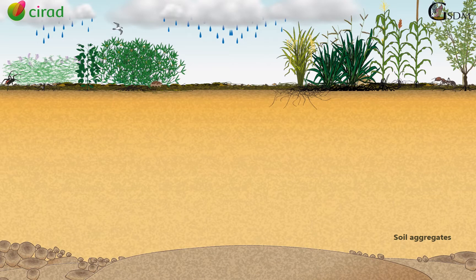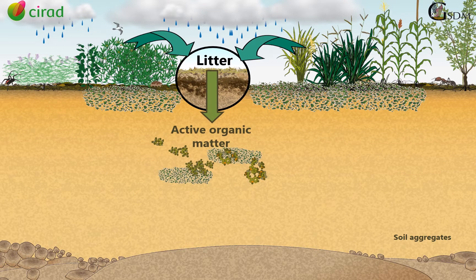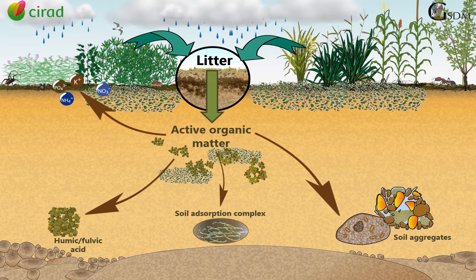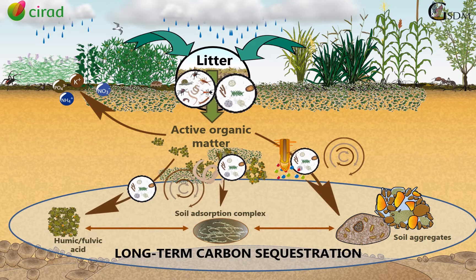To sum up, well-managed DMC systems should provide the soil with a continuous and important flow of diverse and fresh organic matter. A fraction of this active organic matter is quickly mineralized, while the other may be stabilized through the three main processes: progressive humification, adsorption into the mineral soil, and protection within soil aggregates. Each one of these processes offers a different kind of protection to the active organic matter, and they may be combined. Keep in mind that stabilization processes are highly conditioned by the intensity of soil biological activity.